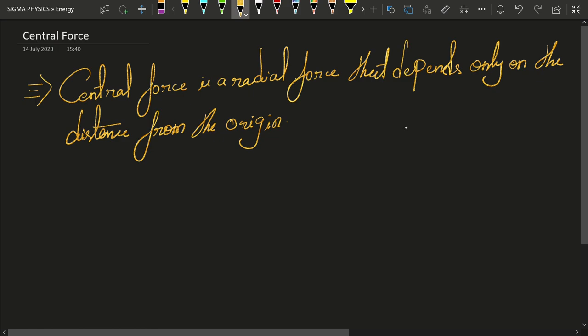To better understand what central forces are, consider a particle in our Cartesian coordinate system. Let's say the position vector of that particle is r and that particle was tracing some kind of curve. This is the curve which the particle was tracing.